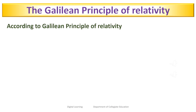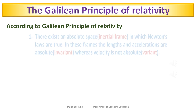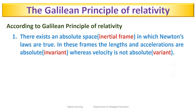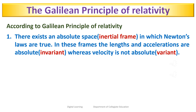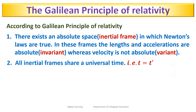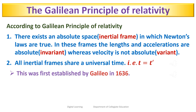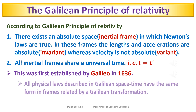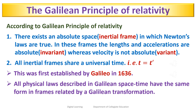According to the Galilean principle of relativity, there exists an absolute space in which Newton's laws are true. In these frames, lengths and accelerations are absolute (invariant), whereas velocity is not absolute (variant). All inertial frames share a universal time, i.e., t = t'. This was first established by Galileo in 1636. All physics laws described in Galilean space-time have the same form in frames related by a Galilean transformation.